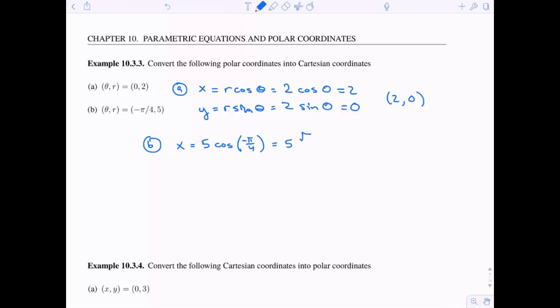How about for B? Again, we go ahead and plug it into our formula. Our x value is going to be 5 root 2 over 2. And our y value is going to be negative 5 root 2 over 2. And that's because sine of negative pi over 4 is negative root 2 over 2. So our final answer, our xy coordinate, is going to be 5 root 2 over 2, comma, negative 5 root 2 over 2.